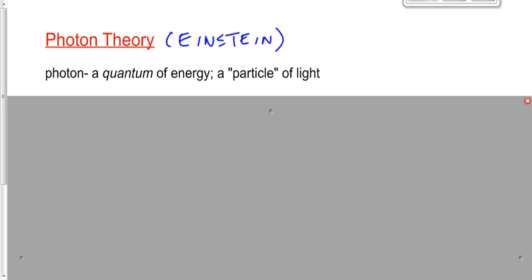We're now suggesting that light is a wave and a particle, a particle that we call a photon.